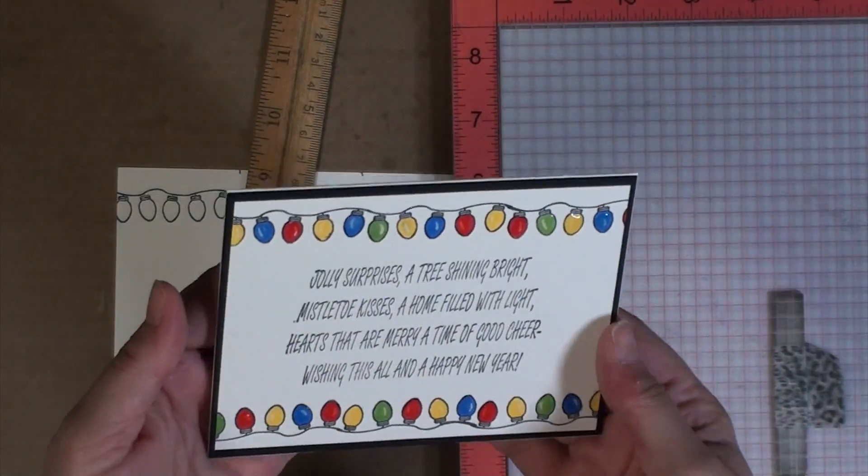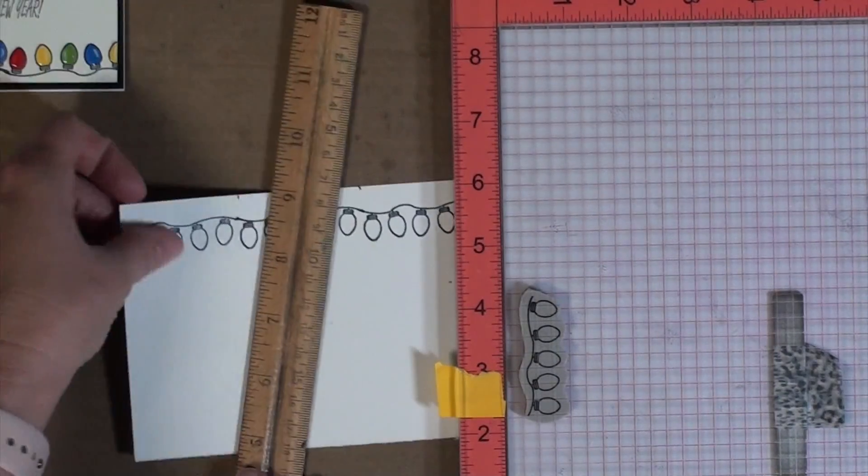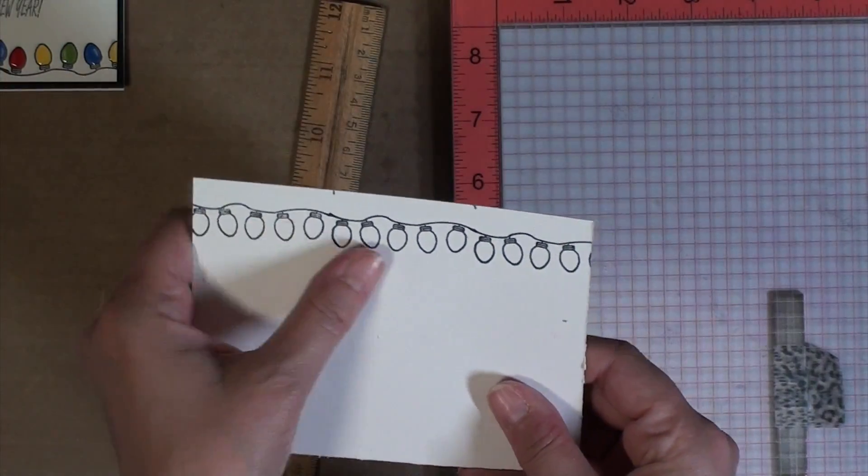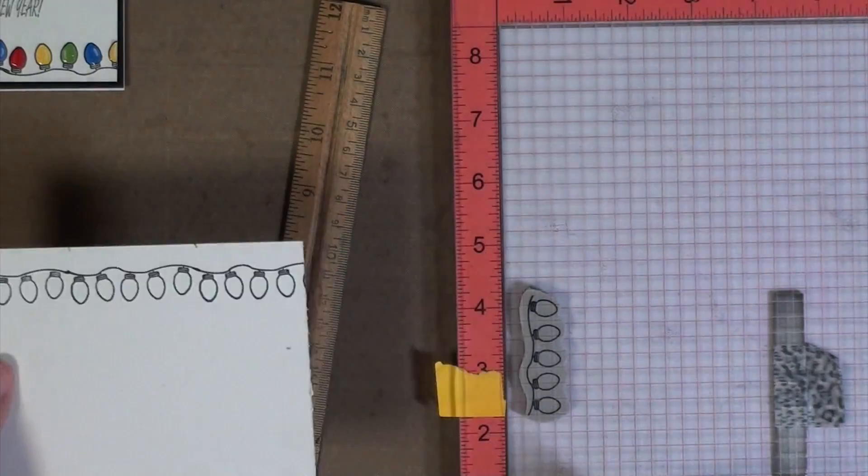So in order to make this continuous string of lights I had to figure out a way to use a much smaller stamp and make sure that it lined up as I stamped across the top. So this is how I did it.